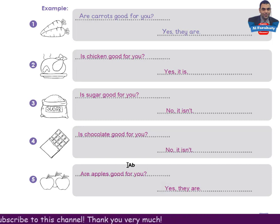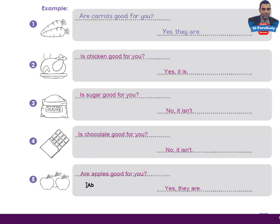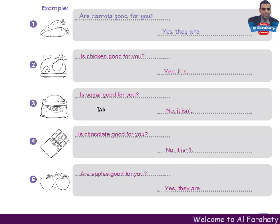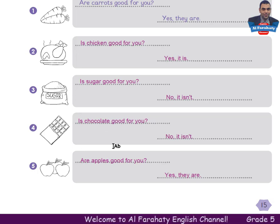Dear students, if you look at these questions carefully, you will find that if we ask about countable food nouns we use 'are' — are carrots, are apples — and if we ask about uncountable food nouns we use 'is' — is chicken, is sugar, is chocolate. Let's go to page 17 of your class book.